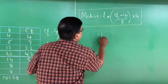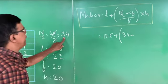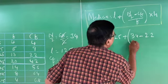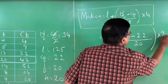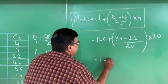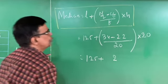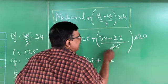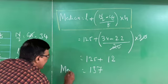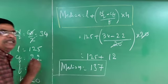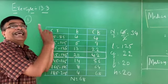Substituting the values: Median = 125 + [(34 − 22) / 20] × 20. That gives 125 + [12/20] × 20. The 20s cancel, leaving 125 + 12 = 137. Therefore, the median of this data is 137.